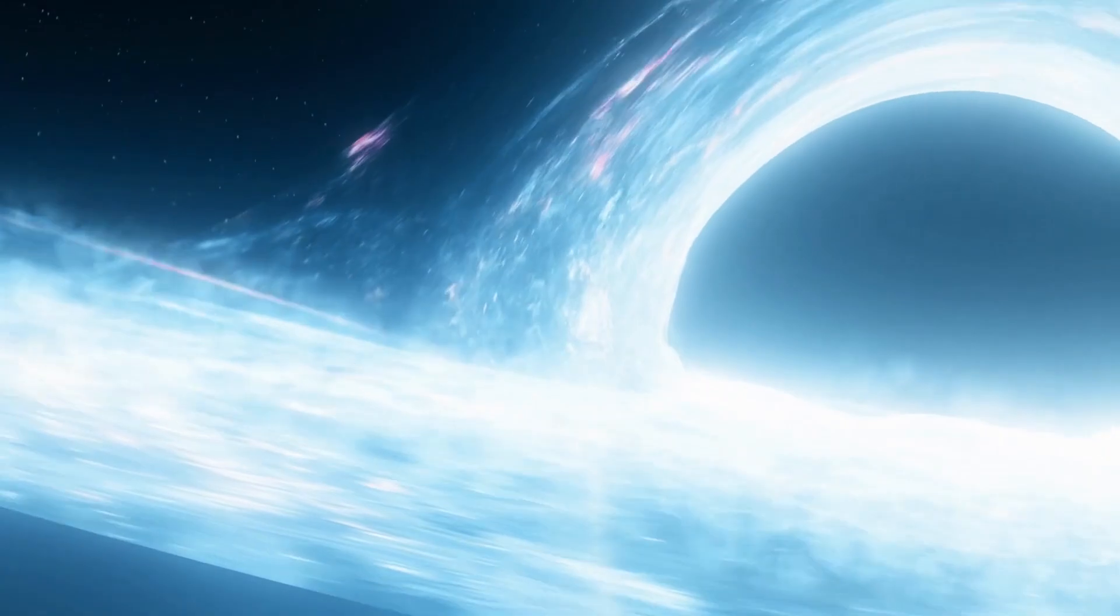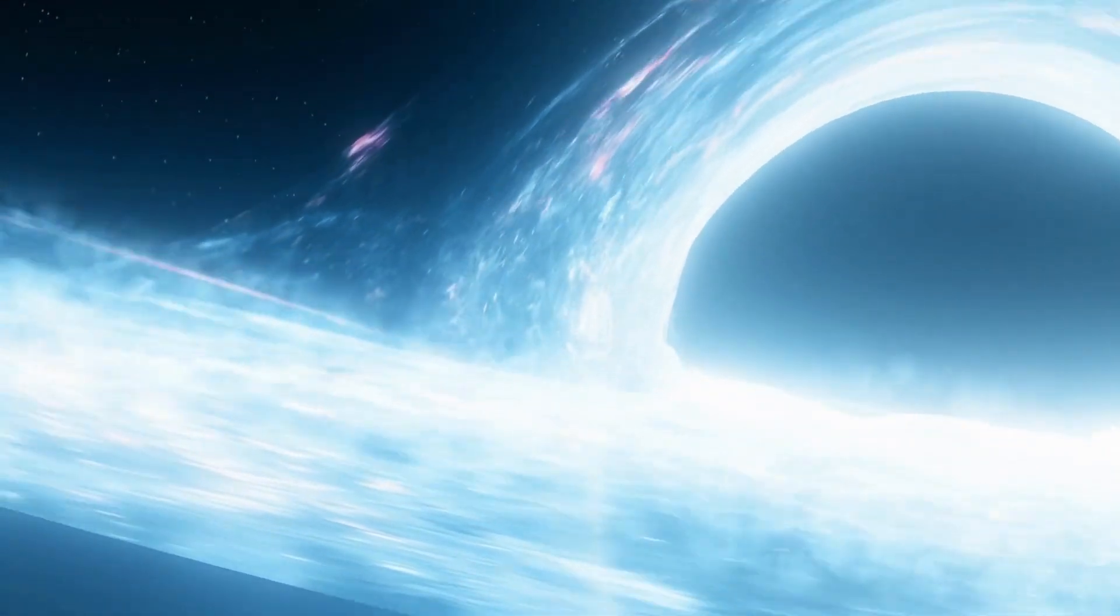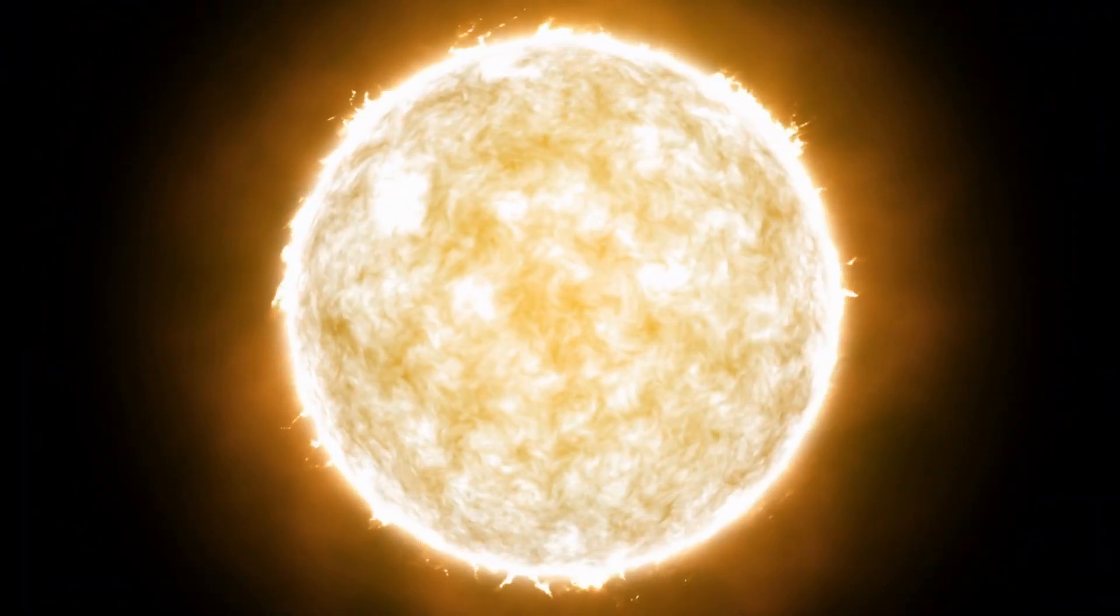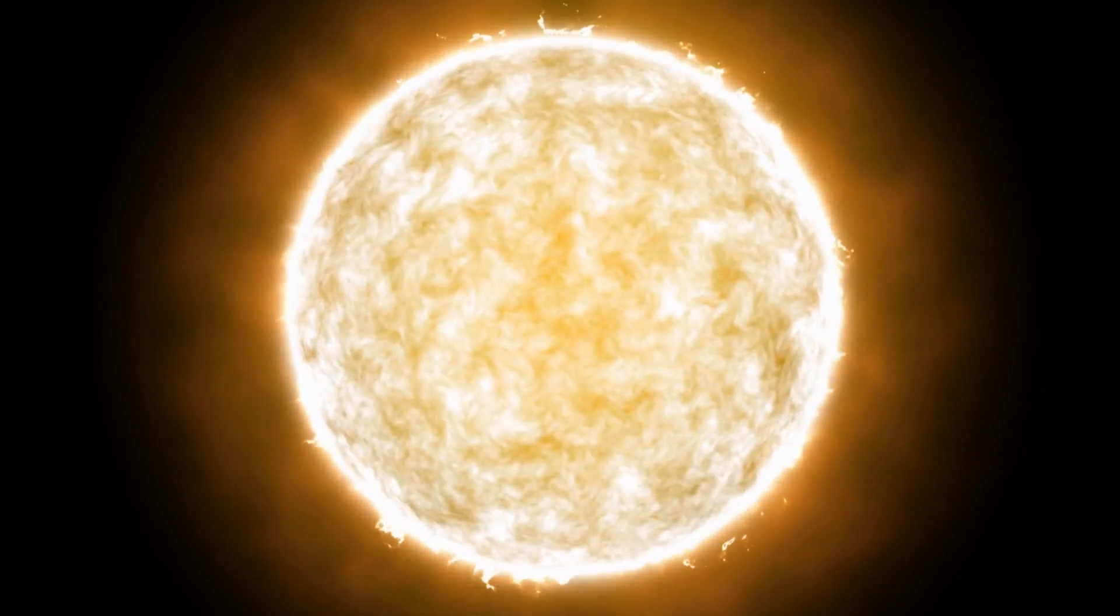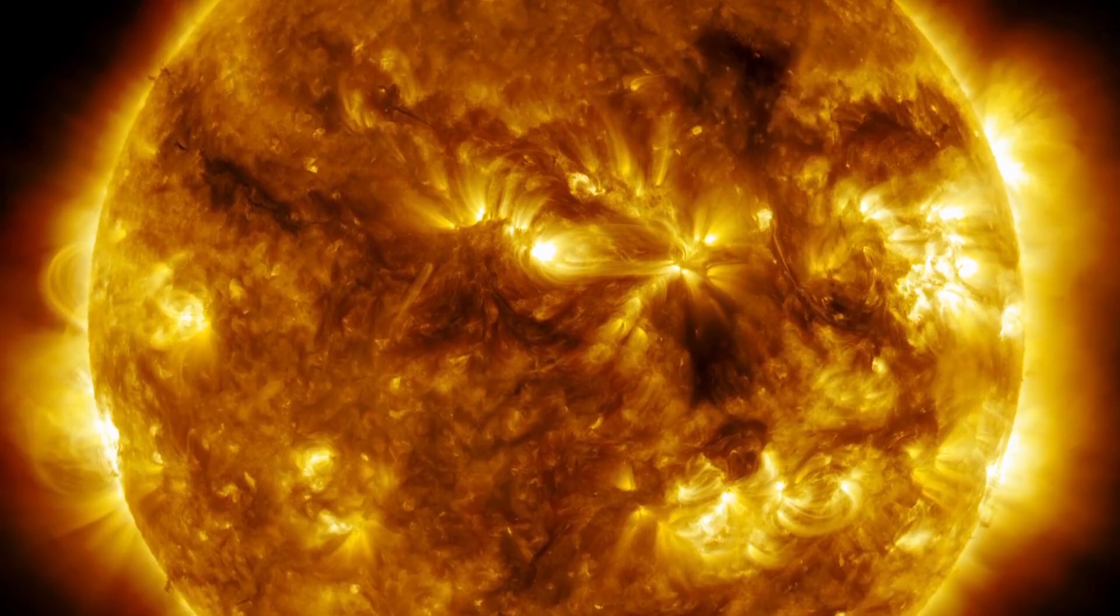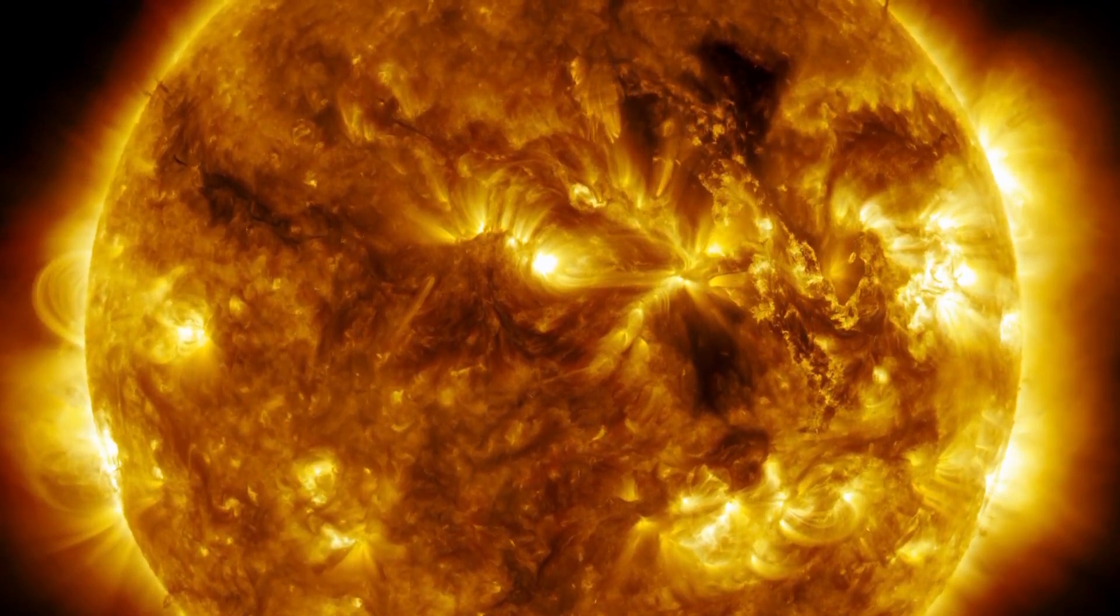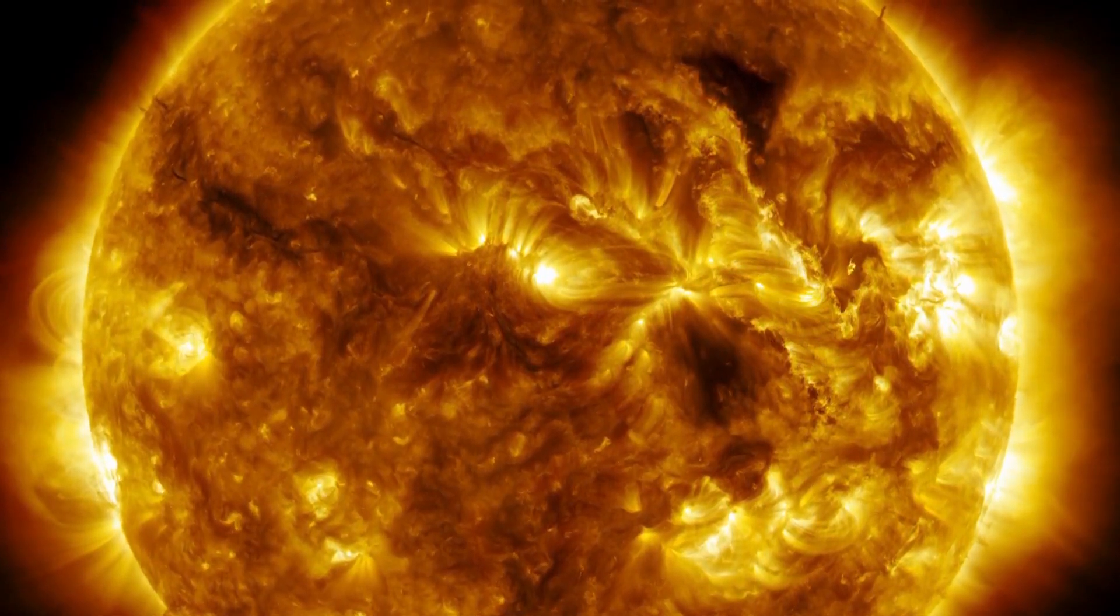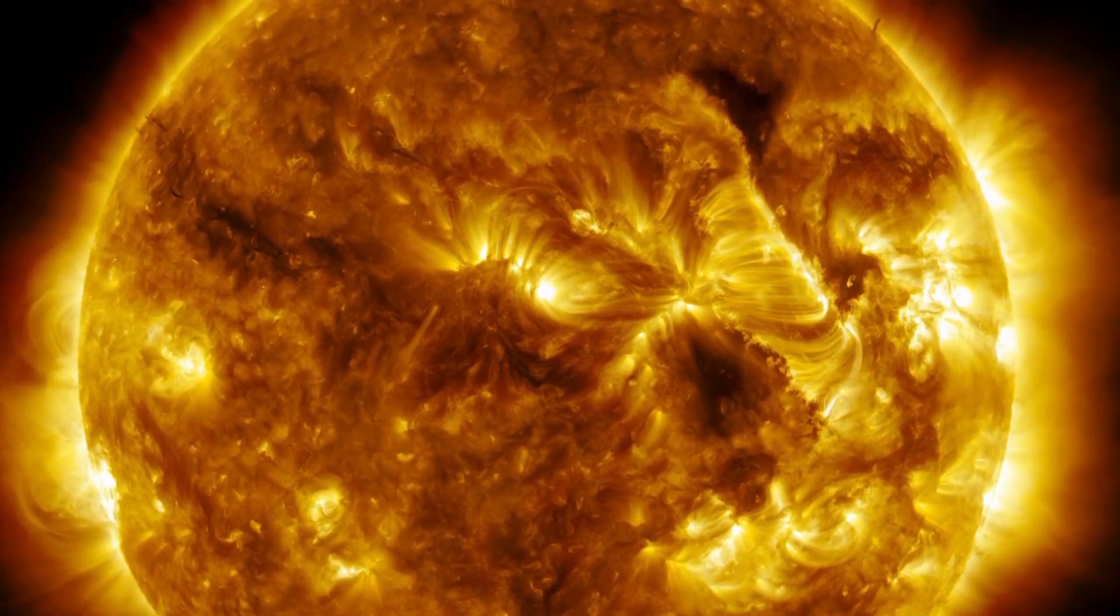To understand how black holes formed and what happens inside them, it is necessary to go back to the life cycle of a massive star. These massive stars are true cosmic powerhouses fueled by the incredible nuclear fusion reactions that take place in their cores. The sun's energy source comes from the fusion of hydrogen into helium. During this process, two hydrogen atoms combine in a collision and form a helium atom. As long as the star has enough hydrogen to carry out the fusion, it can maintain its brightness.